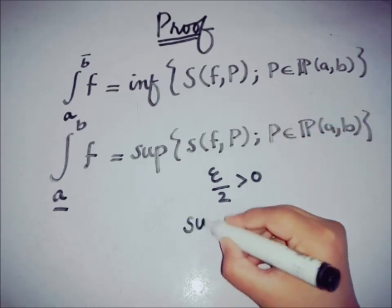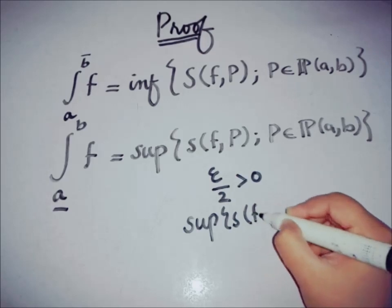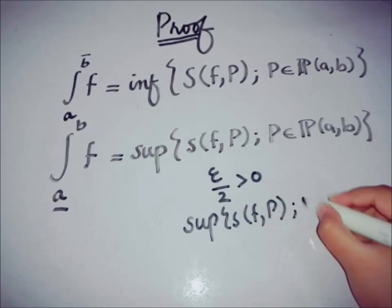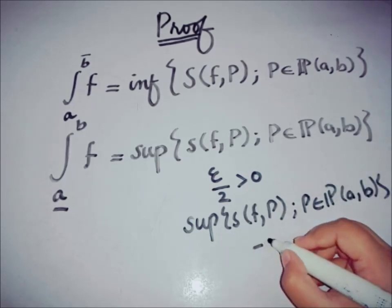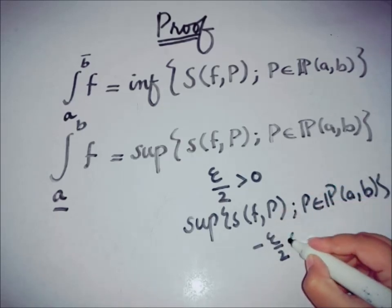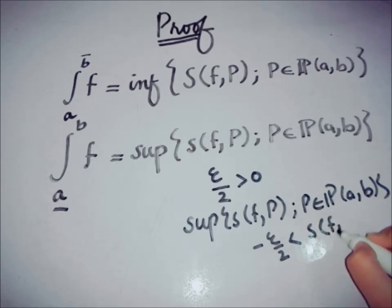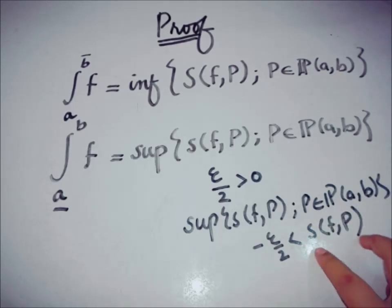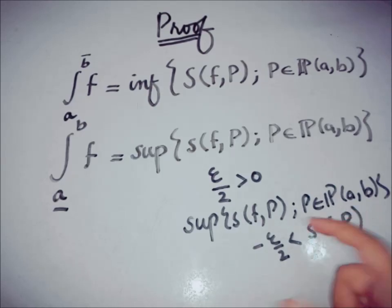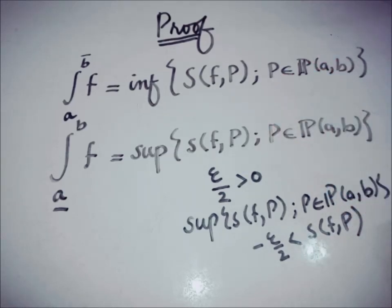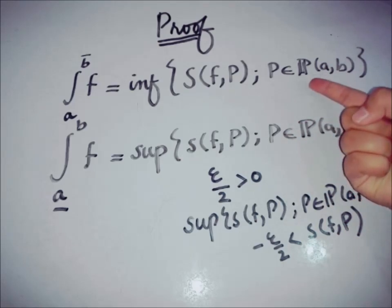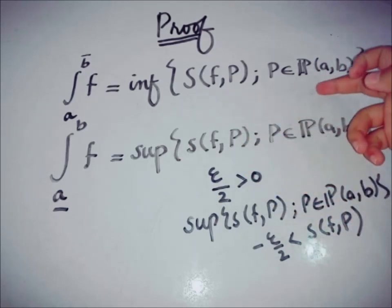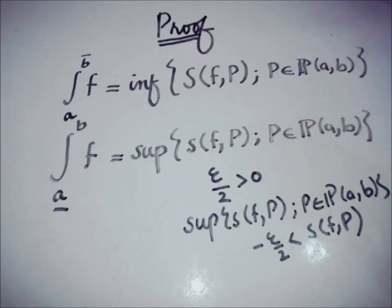If we subtract epsilon over two from the supremum of the set of lower Riemann sums over every possible partition, this quantity is less than any lower Riemann sum. So there exists a lower Riemann sum greater than this value. The same applies to the infimum: since the infimum is the greatest lower bound, adding a positive number means there exists an element from the set that is less than the infimum plus that number.